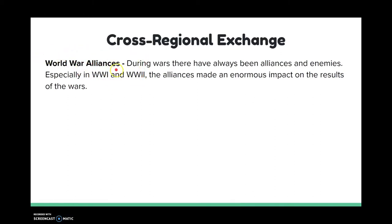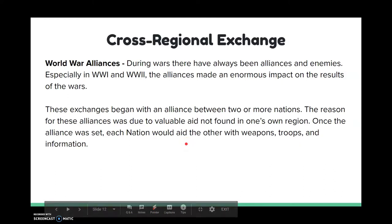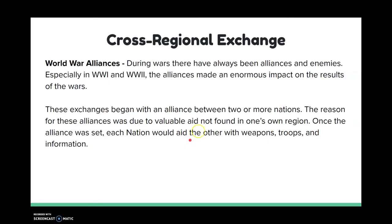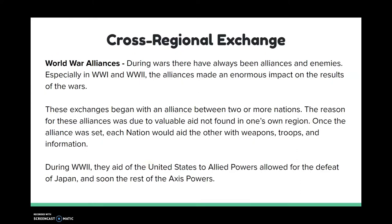Now we're going to move on to the World War alliances. During the World Wars, there were a lot of alliances and enemies. Especially in World War I and World War II, the alliances made an enormous impact on the results of the war. These exchanges began with alliances — when one region needed help, another region would ask what's in it for them, and they exchanged items. One nation might not have tanks and submarines, and another might not have troops, so they would exchange troops for armory. You see weapons, troops, and information exchanged. Even the alliance itself is an exchange — they exchanged trust with each other. For example, during World War II, the aid of the United States and the Allied powers allowed for the defeat of Japan and soon the rest of the Axis powers. The United States traded trust, and that sense of trust was basically the basis of the exchange.